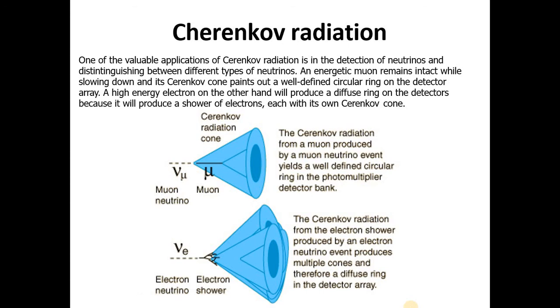One of the valuable applications of Cherenkov radiation is in the detection of neutrinos. So it is used for the detection of neutrinos and distinguishing between different types of neutrinos. An energetic muon remains intact while slowing down and its Cherenkov cone points out a well-defined circular ring on the detector array, you can see in the images. A high-energy electron, on the other hand, will produce a diffuse ring on the detectors because it will produce a shower of electrons, each with its own Cherenkov cone. You can see the Cherenkov radiation cone for muon neutrino and electron neutrino electron showers.